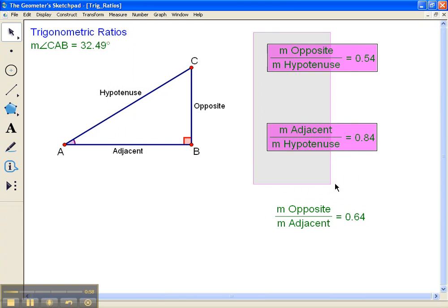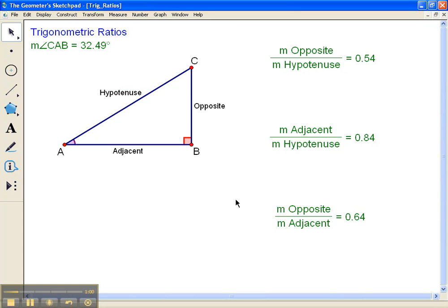Okay these are the three main trig ratios. To see which ones they are we're going to measure the sine, the cosine, and tangent of this angle measurement. Anytime you do sine, cosine, and tangent it's always of the angle measurement, one of these acute angle measurements. In this case it's angle A.